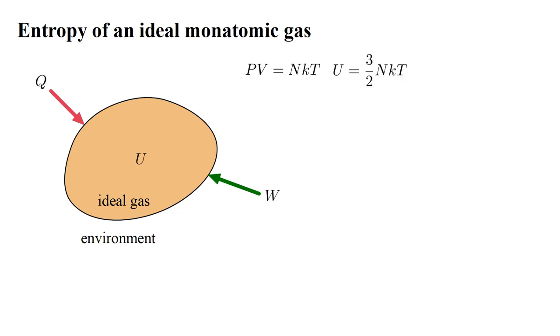The internal energy is the heat capacity, three-halves NK times the temperature T. And the first law of thermodynamics gives us the relation dU equals delta Q plus delta W. dU is a tiny change in the internal energy, delta Q is a tiny amount of added heat, and delta W is a tiny amount of work done on the gas.